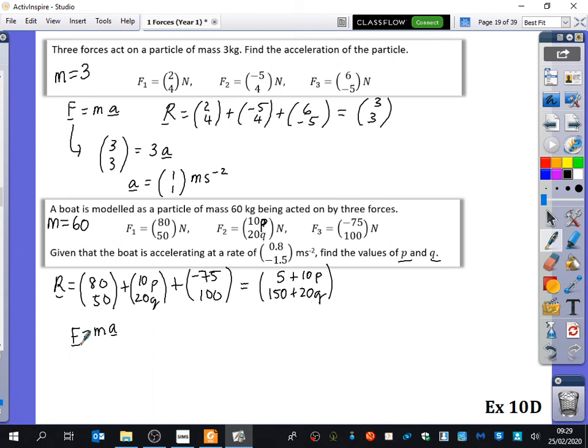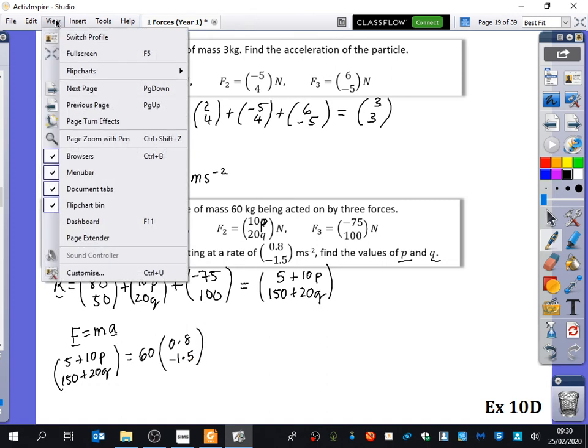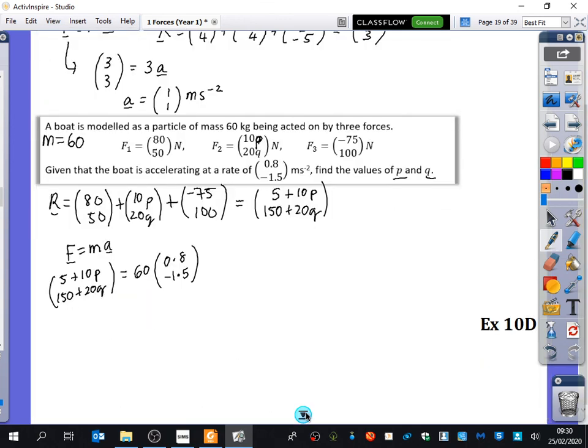So we know that F equals ma. But in this case, our F is this one, the resultant force. So we get (5 + 10P, 150 + 20Q) is equal to the mass, which is 60 times by the acceleration, which is (0.8, -1.5). Nearly there. So that must mean that 5 plus 10P is equal to 60 times 0.8 just from multiplying these parts out that we've got here.